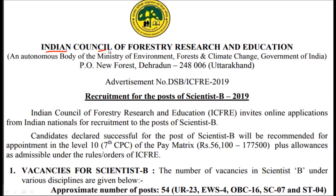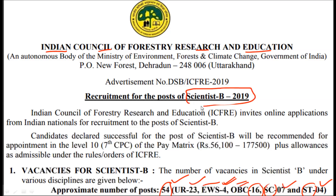This advertisement is coming from Indian Council of Forestry Research and Education. This advertisement is for 54 vacancies in total. For open candidates there are 23 vacancies, for EWS candidates there are 4 vacancies, for OBC (Other Backward Classes) there are 16 vacancies, for SC category there are 7 vacancies, and for ST category there are 4 vacancies. This Scientist B post has the pay matrix of Rs. 56,100 to 1,77,500 rupees plus other allowances admissible under the rules.